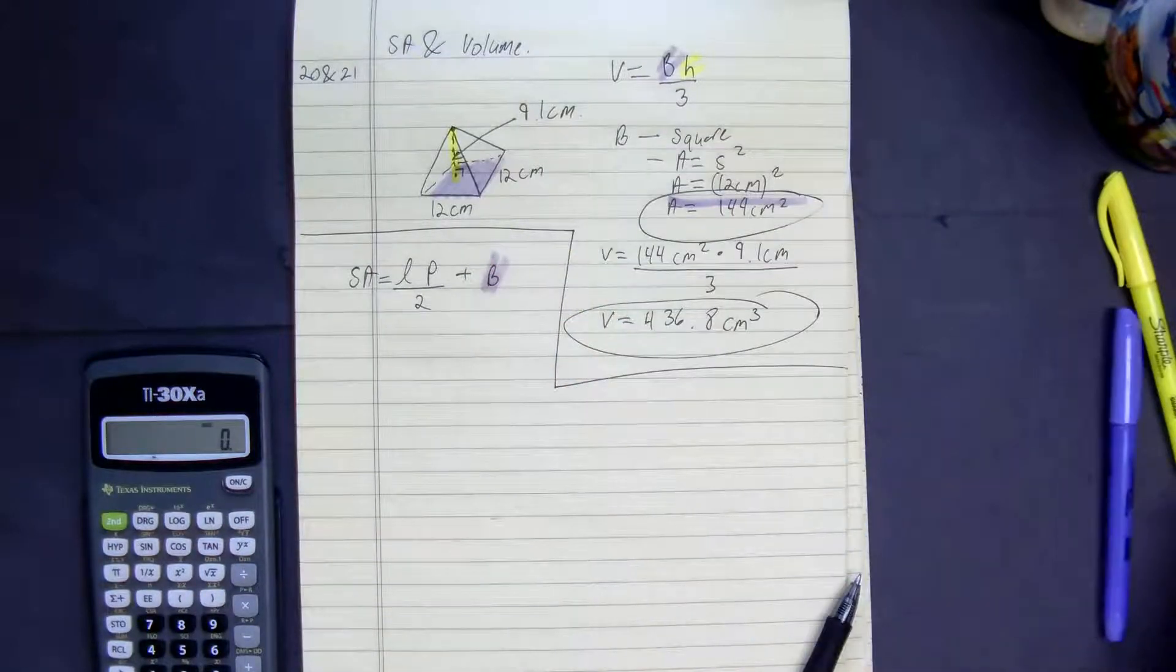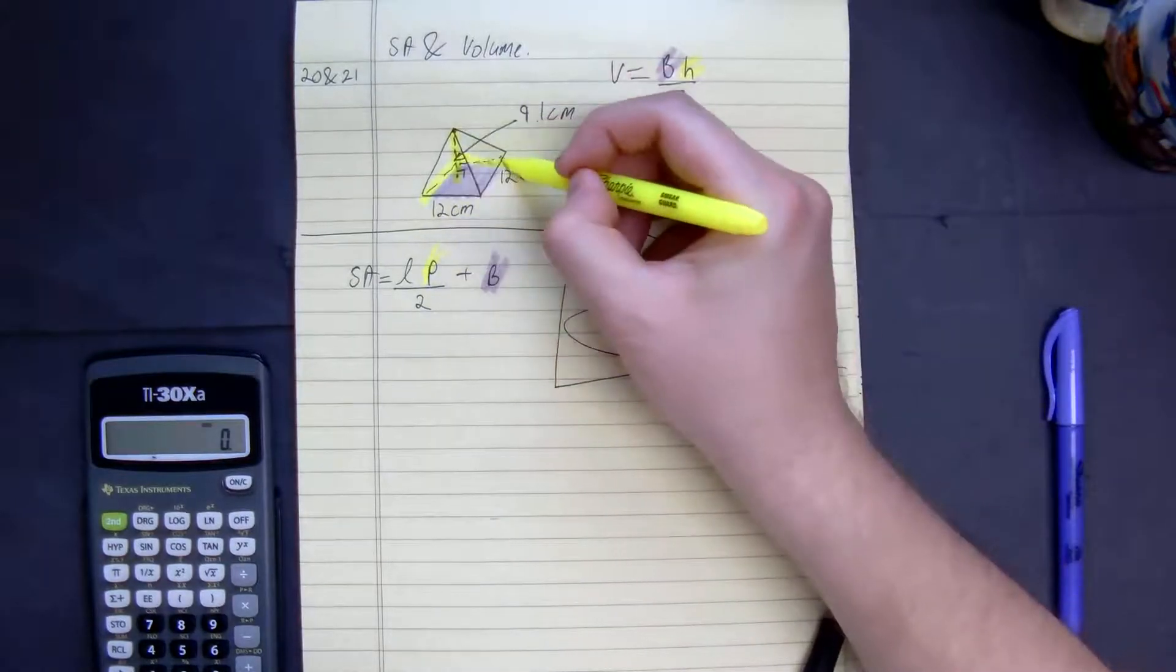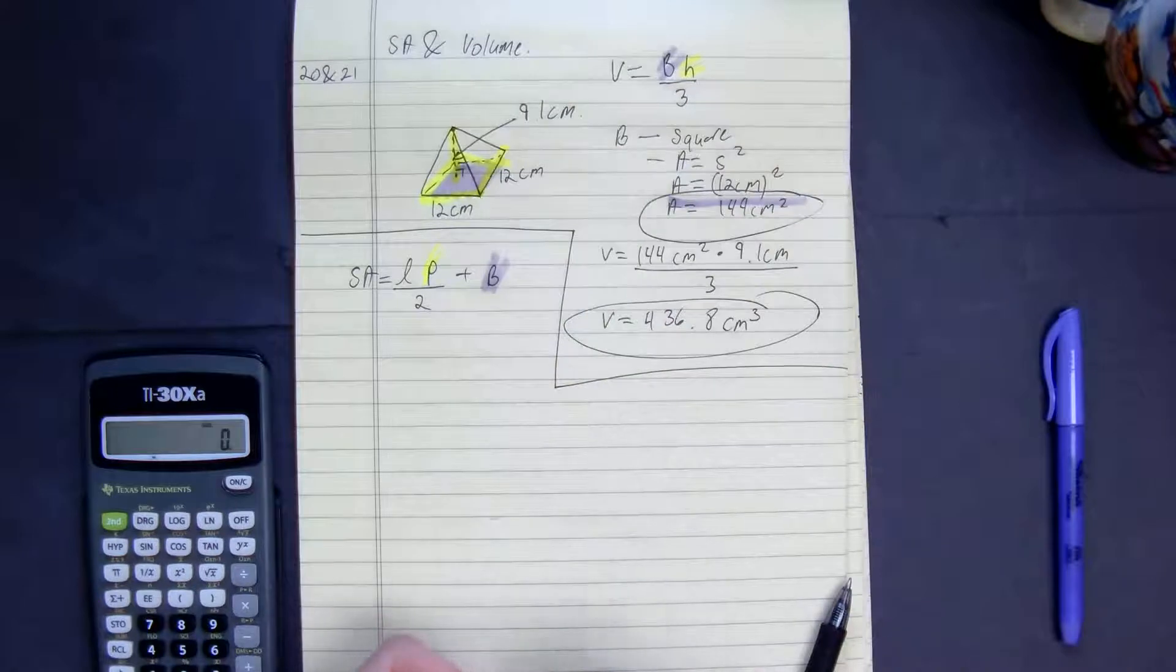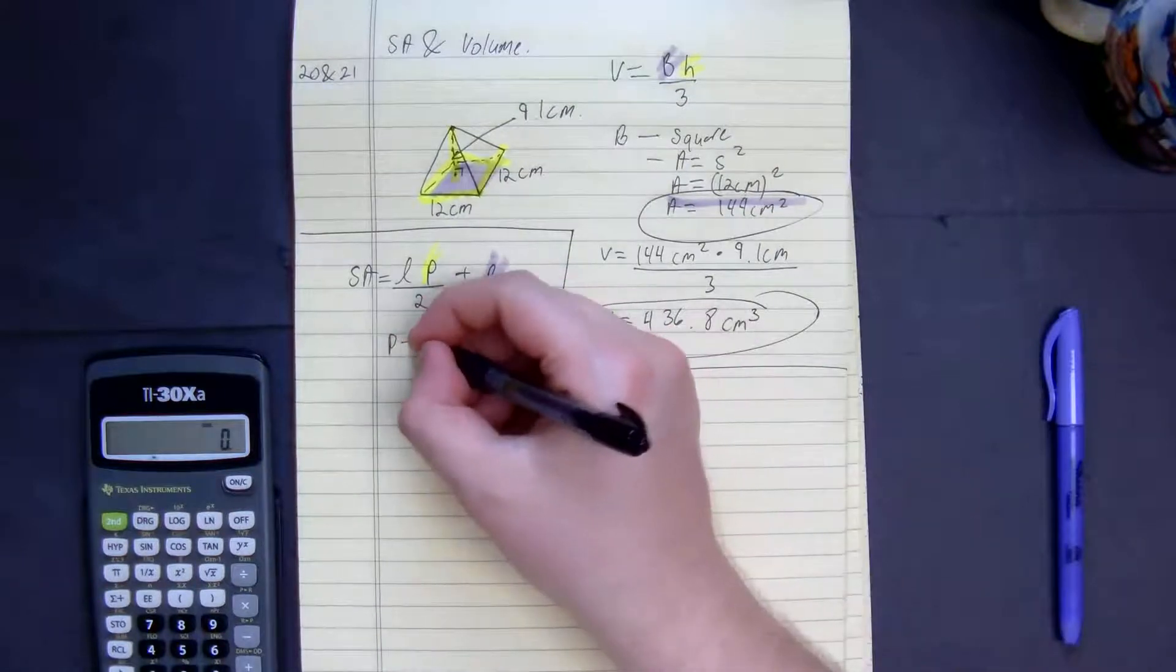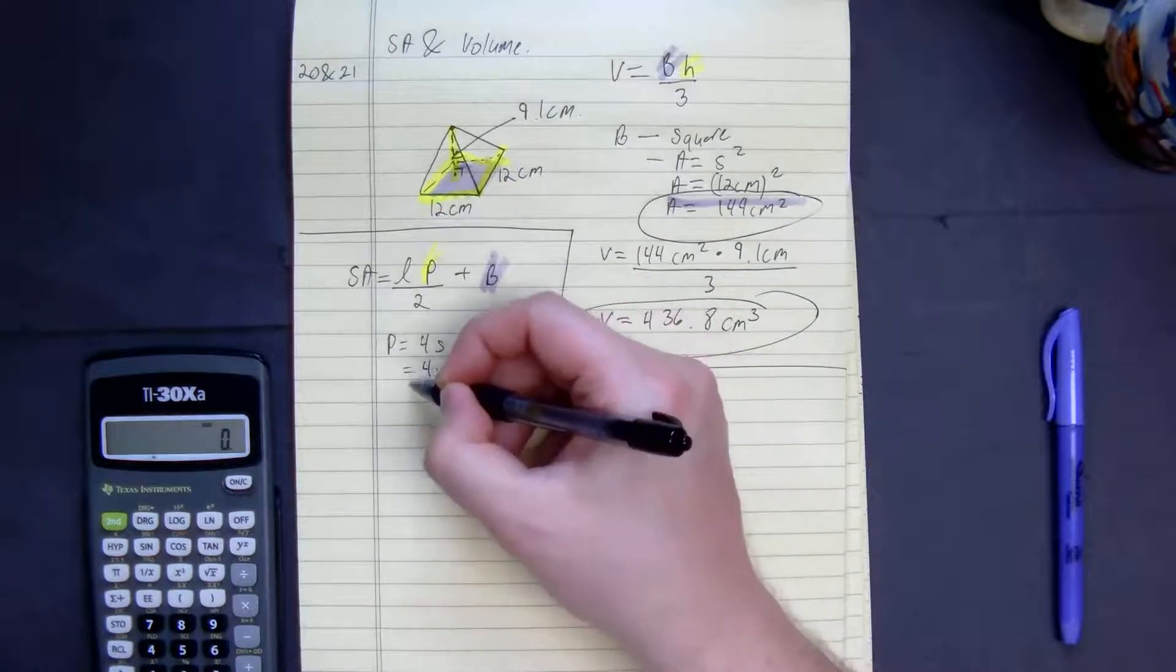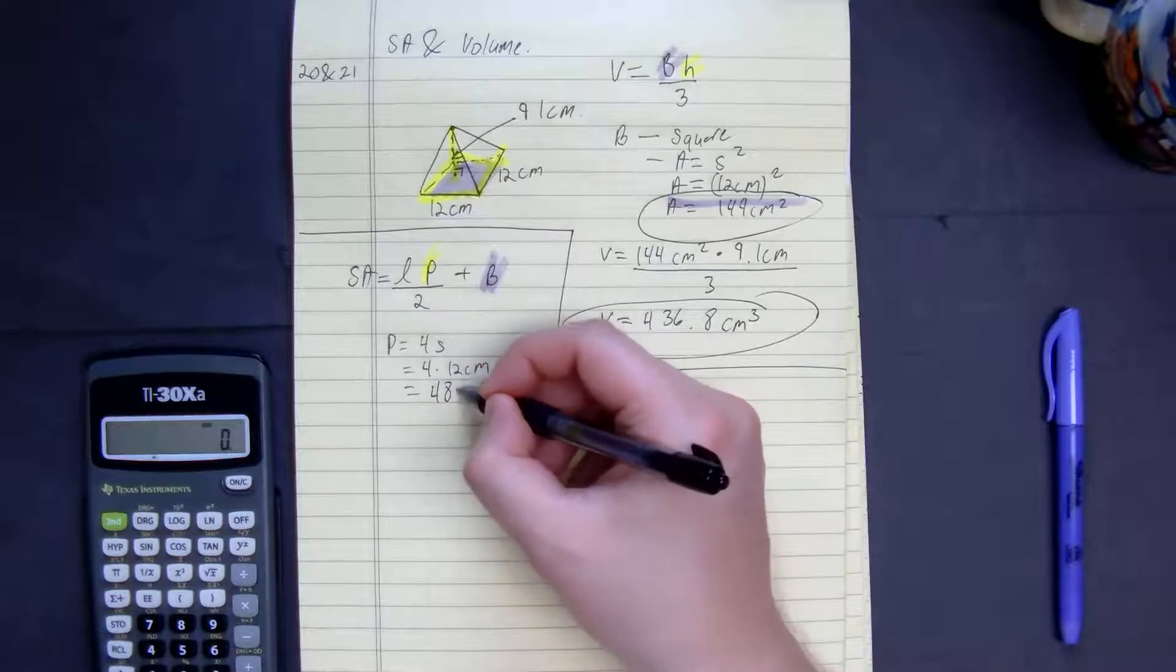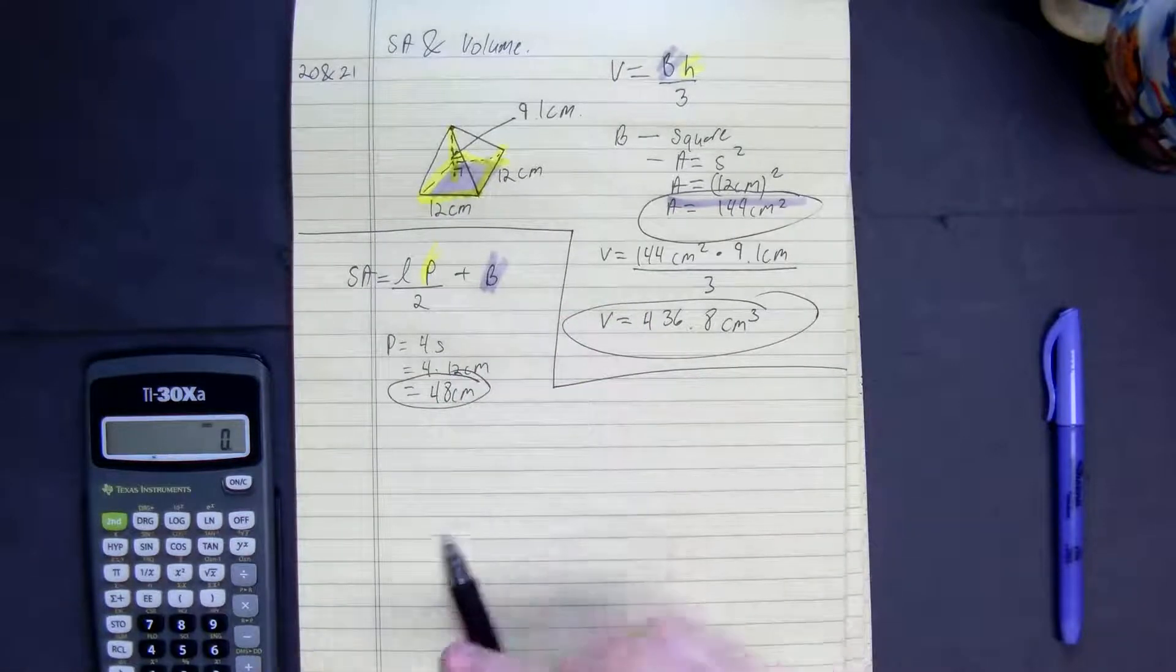First, let's do the easiest one since I know we can do it. Let's find the perimeter. The perimeter is just going to be a square. So P is equal to 4s, which is equal to 4 times 12 centimeters. So we get 12, 24, 36, 48 centimeters for our perimeter.